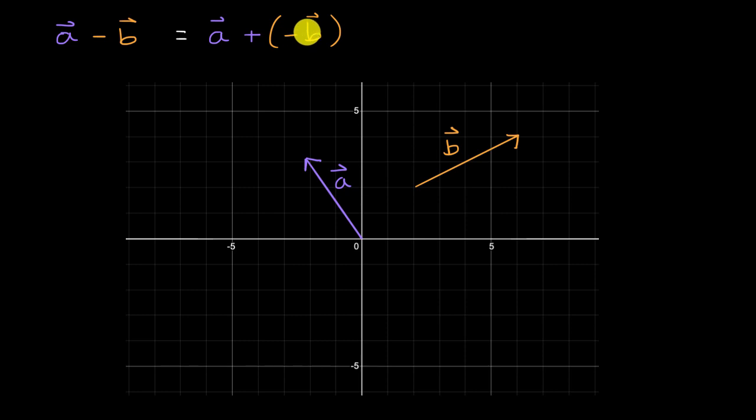Now, what does the negative of vector b look like? Well, that's going to be a vector that has the exact same magnitude as vector b, but just in the opposite direction.